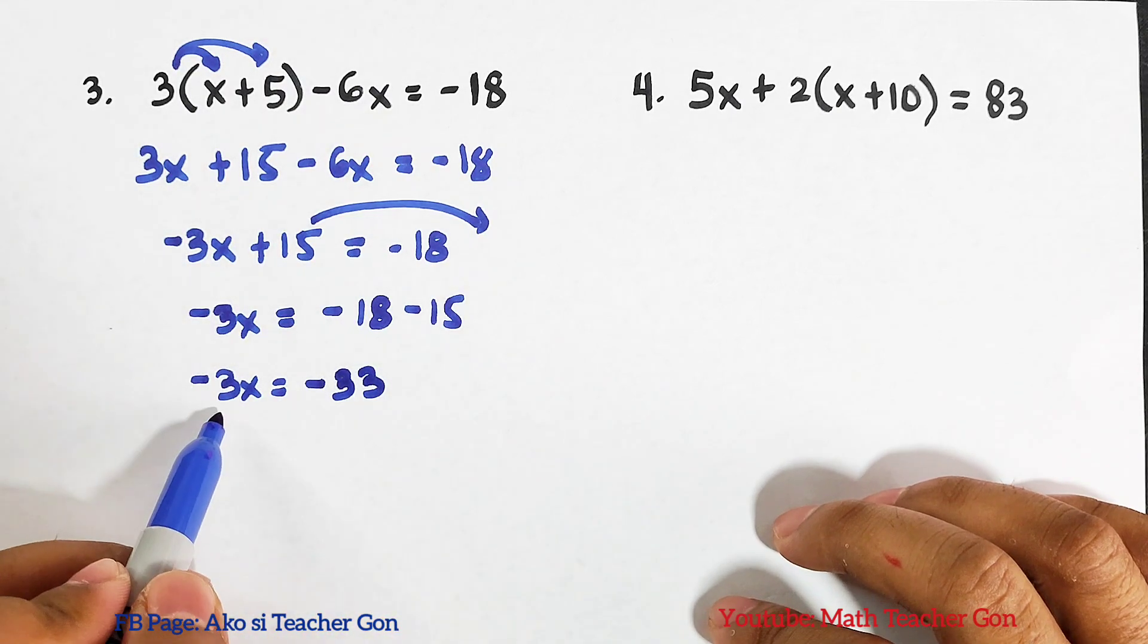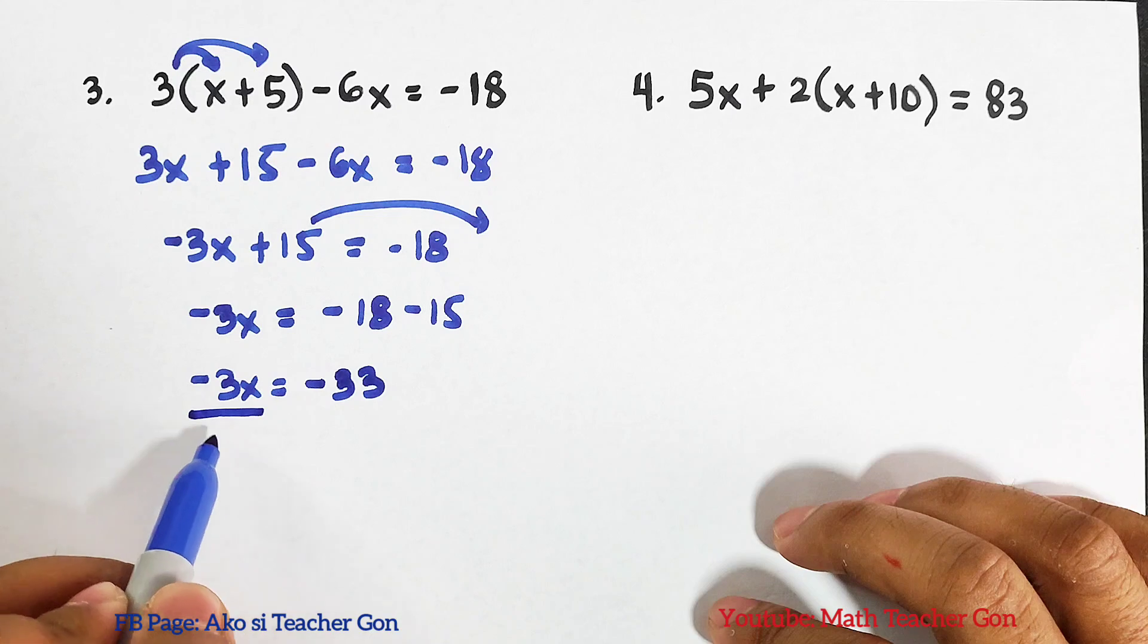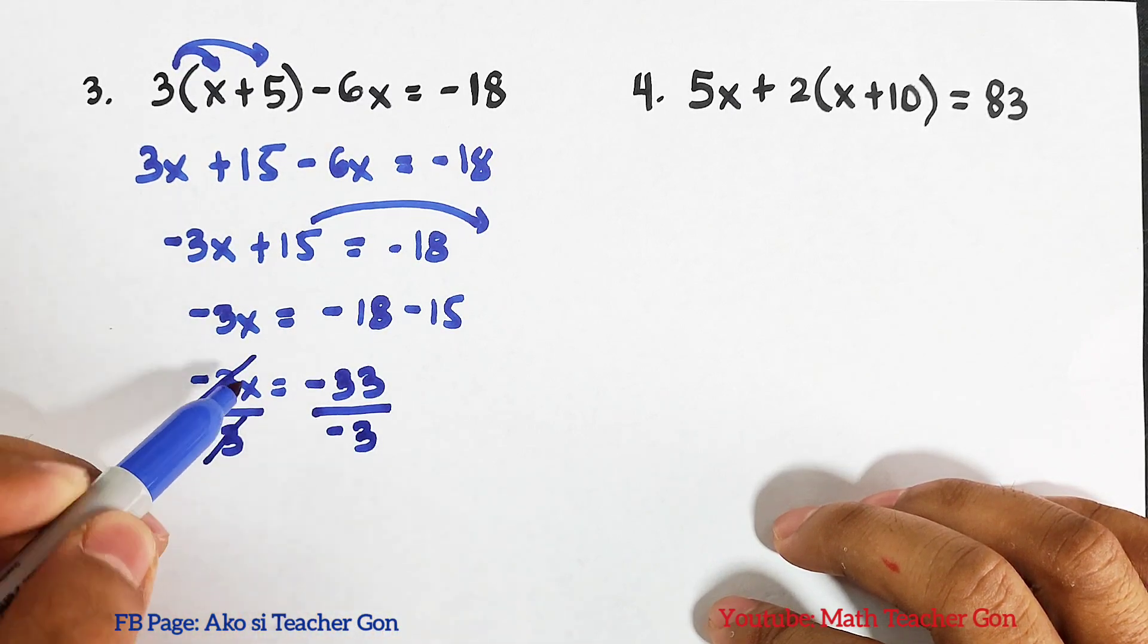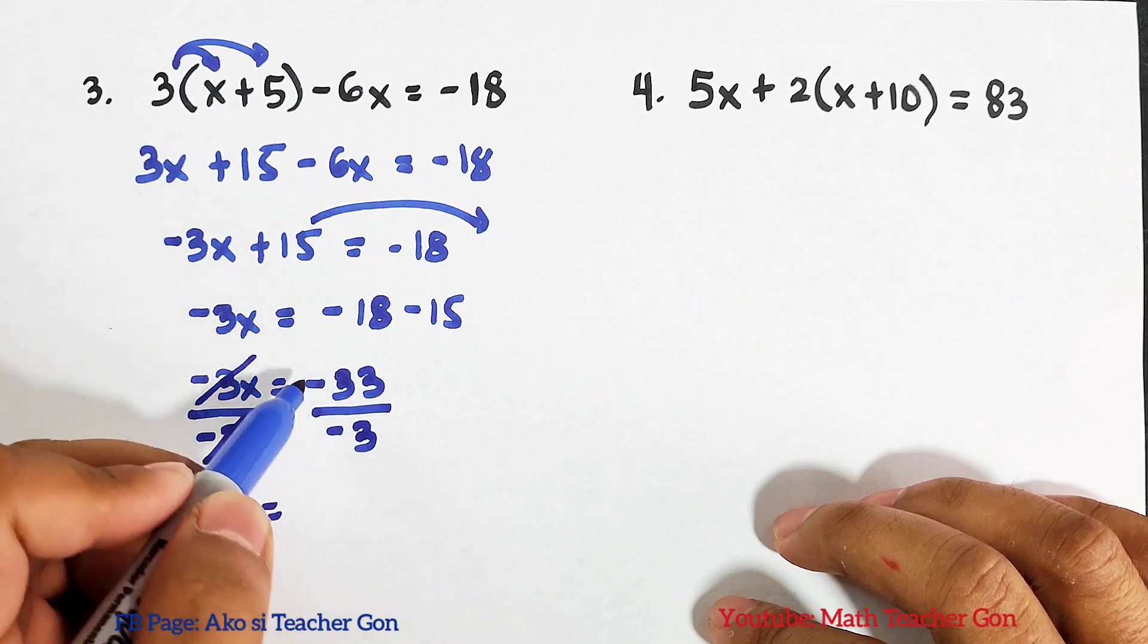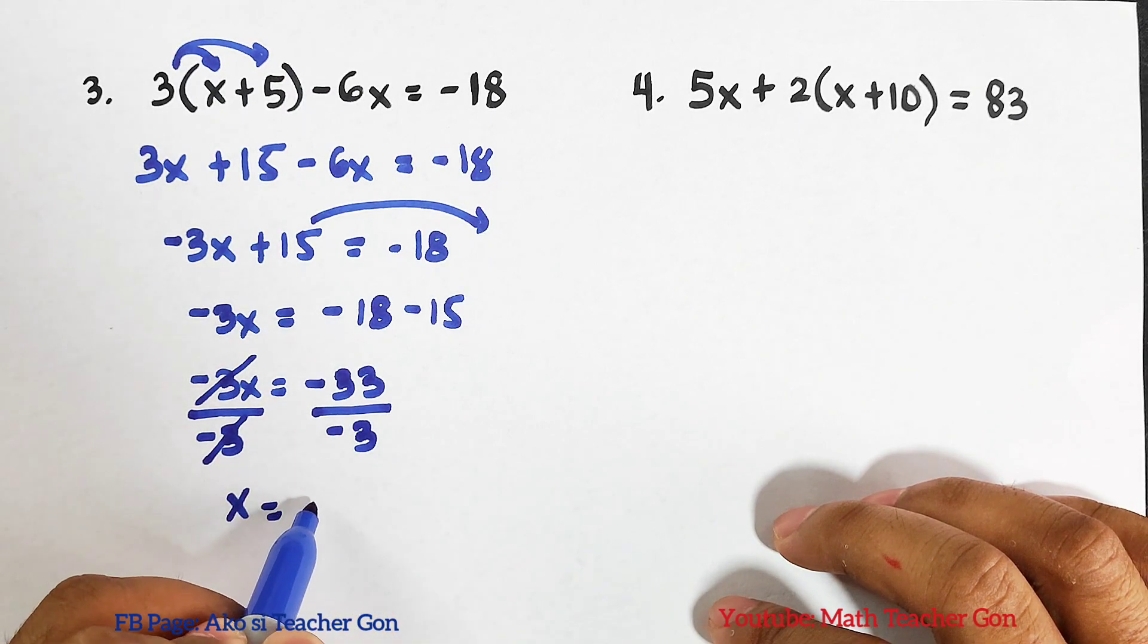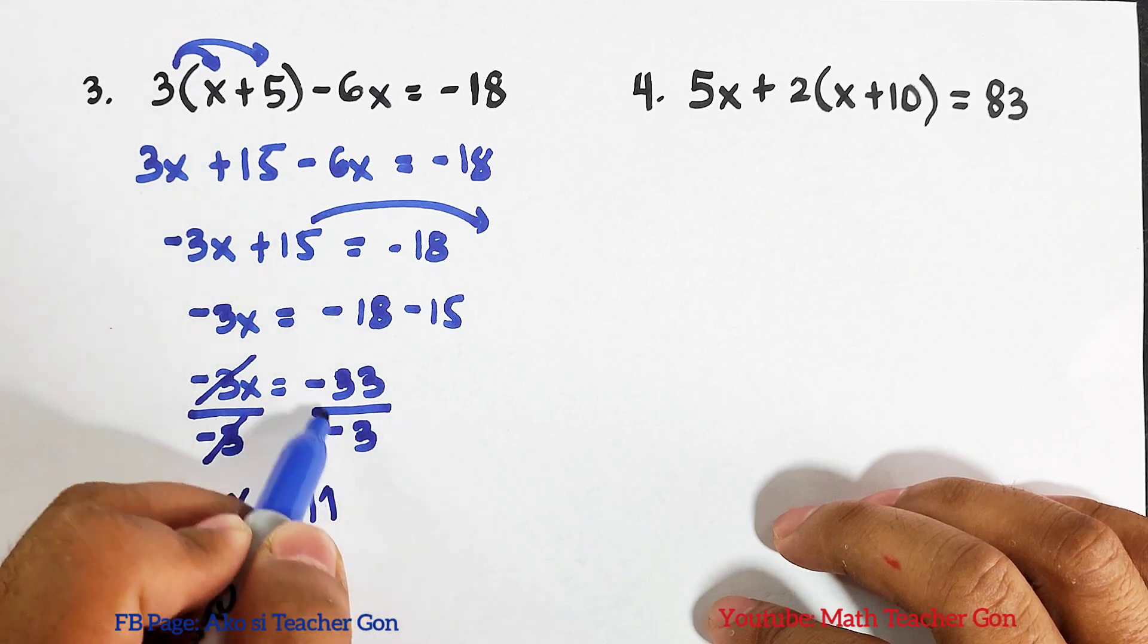Now since we have here negative 3, our divisor is negative 3. Cancel this out. Your x is equal to, negative times negative is positive. This is 33 over 3, which is positive 11, because the two numbers or the two integers are both negative.